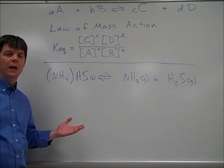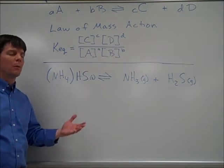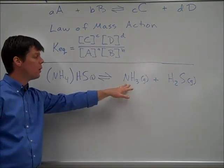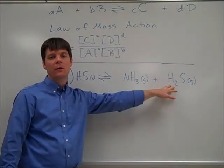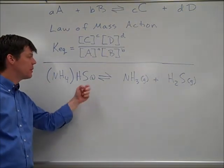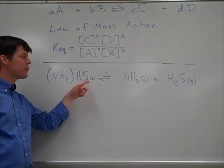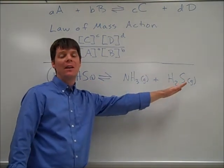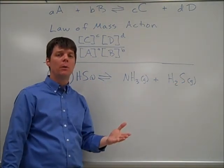Here we see another example of a reversible chemical process where ammonium hydrosulfide can be used to form ammonia and hydrogen sulfide gas. The interesting thing about this one is to consider the fact that the ammonium hydrosulfide here is a solid, whereas the two products are gases.